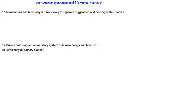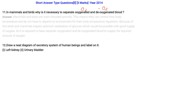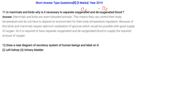In mammals and birds, why is it necessary to separate oxygenated and deoxygenated blood? Mammals and birds are warm-blooded animals — they can control their body temperature without depending on the environment. Because of this, they require optimum oxidation of glucose, which is only possible with a good supply of oxygen. That is why it is necessary to have separate oxygenated and deoxygenated blood to supply the required amount of oxygen.